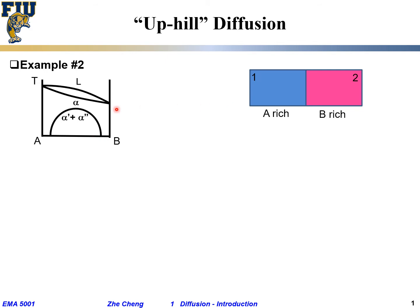We put piece one and piece two together at a temperature T that is below the critical temperature of the miscibility gap. Initially they have the same crystal structure but different compositions and different lattice parameters. Piece one is closer to A — so piece one is A-rich — while piece two is closer to B, meaning piece two is B-rich.